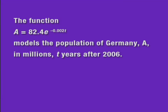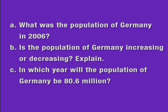The function A equals 82.4 times e to the negative 0.002t models the population of Germany, A, in millions, t years after 2006.